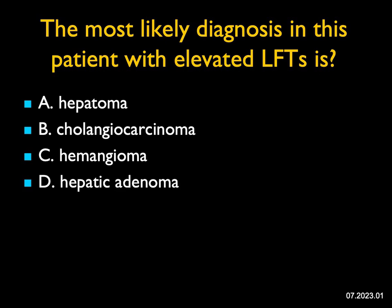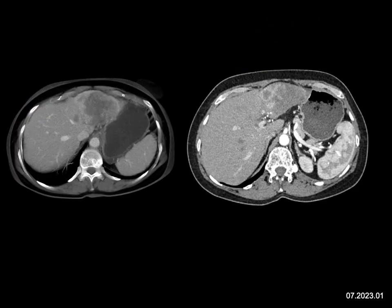The most likely diagnosis in this patient with elevated LFTs is — well, what do I see? I see a mass in the left lobe of the liver. It's a little better seen on the venous than the arterial phase. It's slightly vascular but not very vascular. It looks like it involves the left portal vein, but there's no duct dilatation and it's a solitary mass.